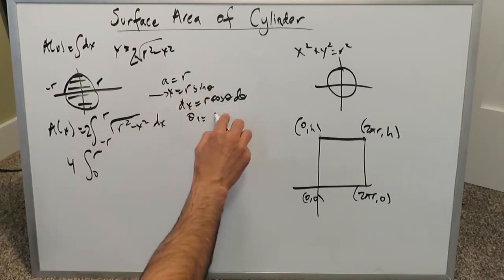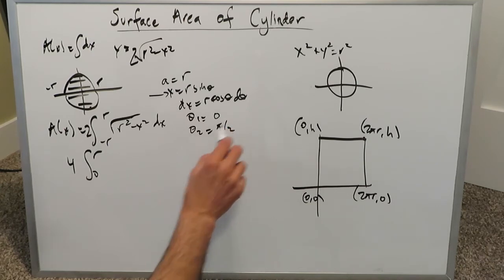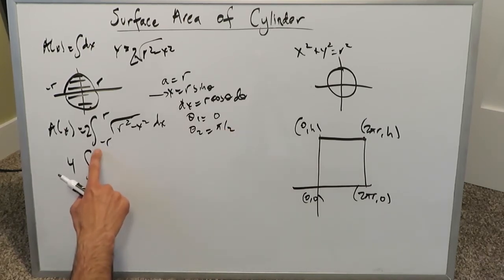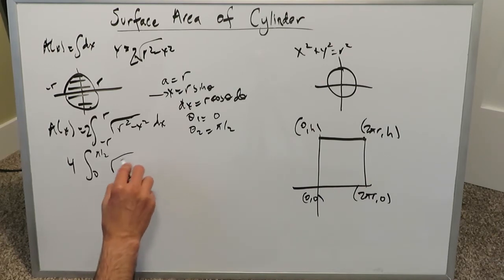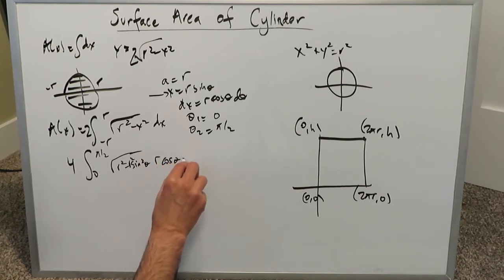So now we have 4, we have π/2 upper limit and a 0, here we have r² - r² sin² θ, we've seen all of this before, r cos θ dθ. When you simplify all of this, you get an r cos θ, which you multiply with this, and you get r² cos² θ.